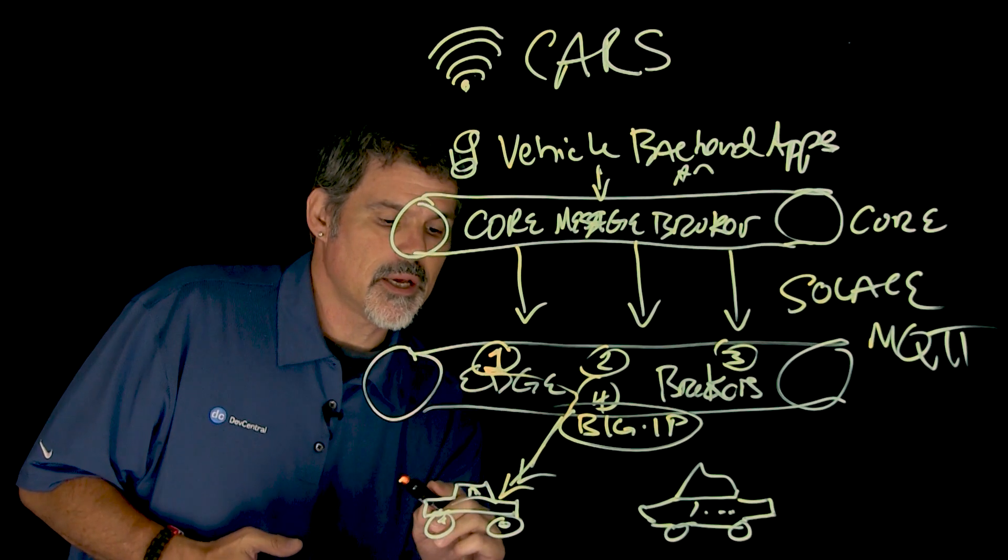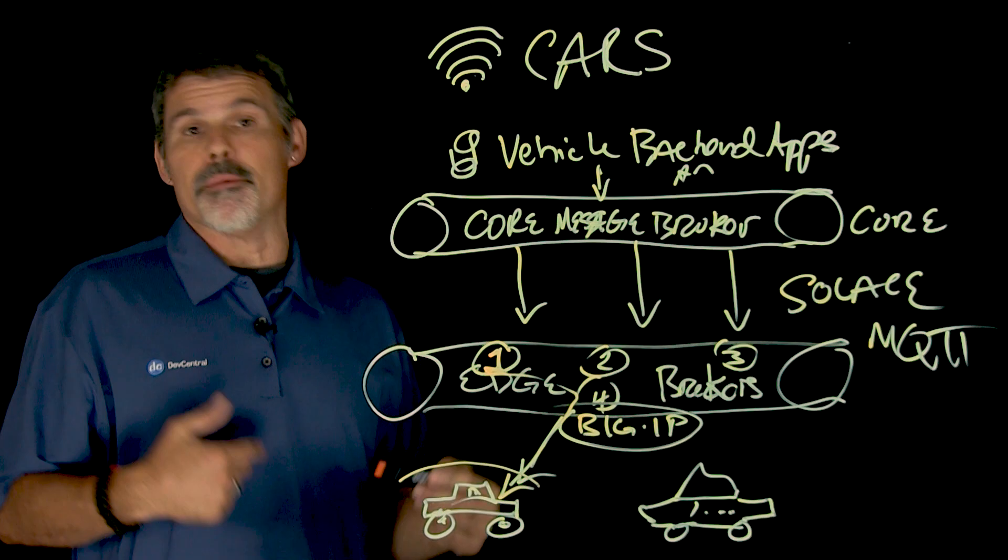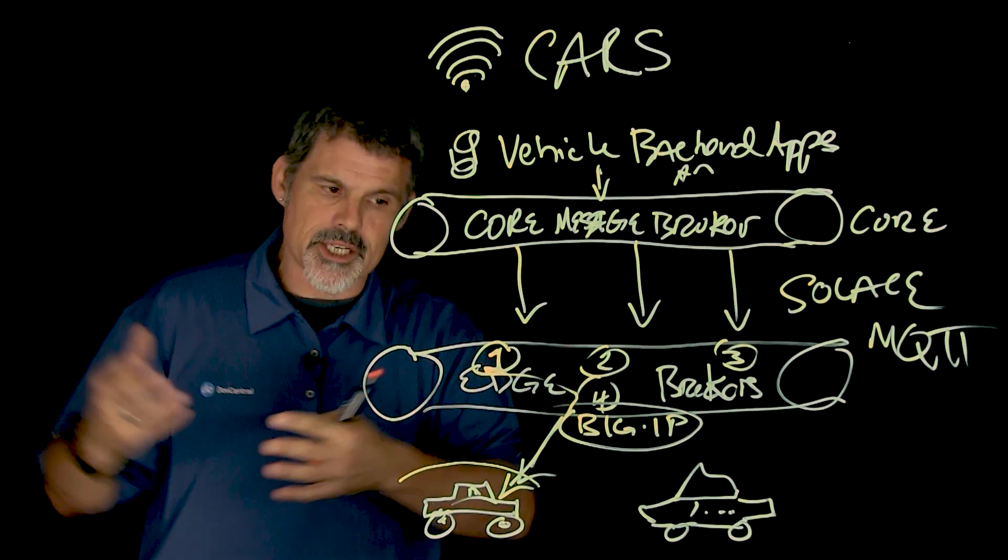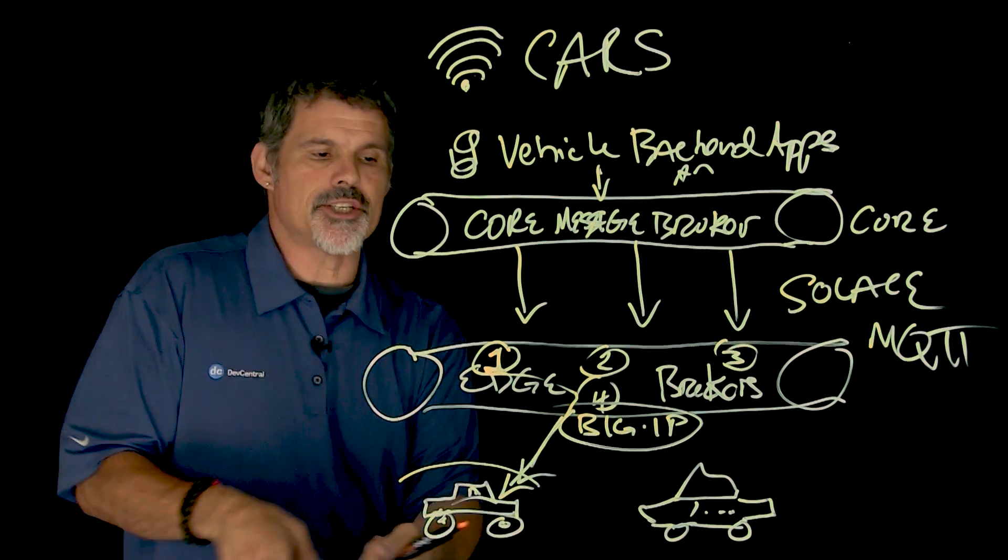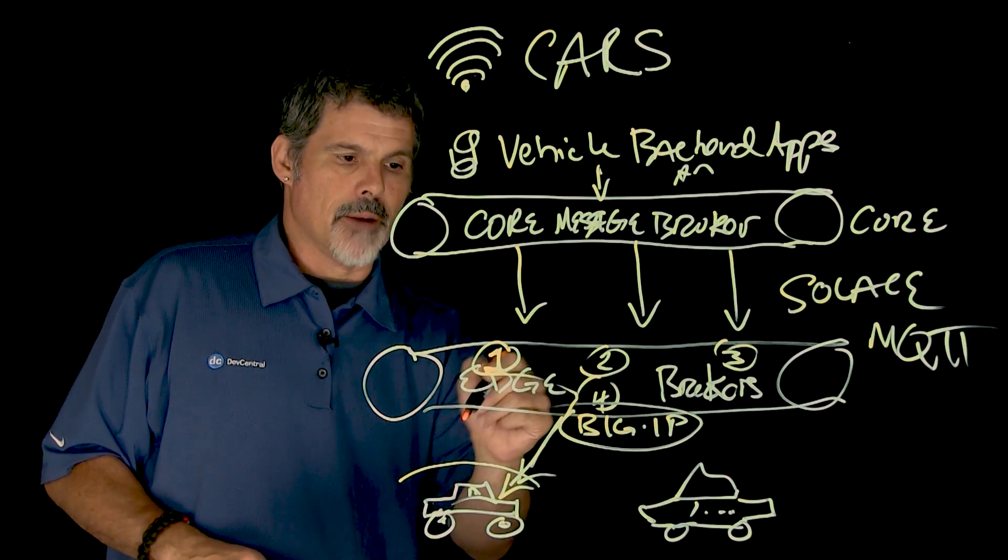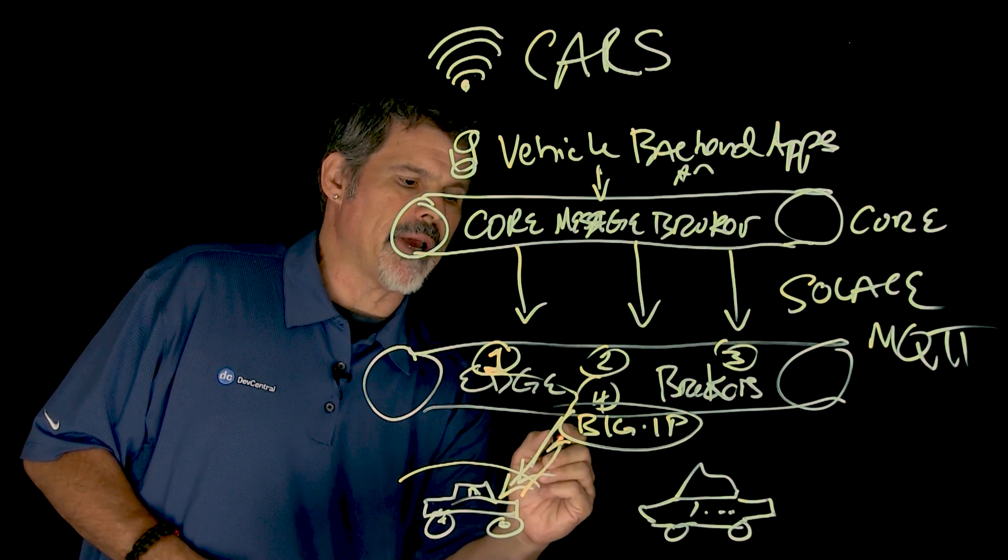message broker one, then communicates it to car number one. Now, say if car number one, you know, is not connected at the time, is in the tunnel for whatever reason. And then once it comes out of the tunnel, it still needs to connect back to that specific one, number one message broker. And that's where big IP comes in.